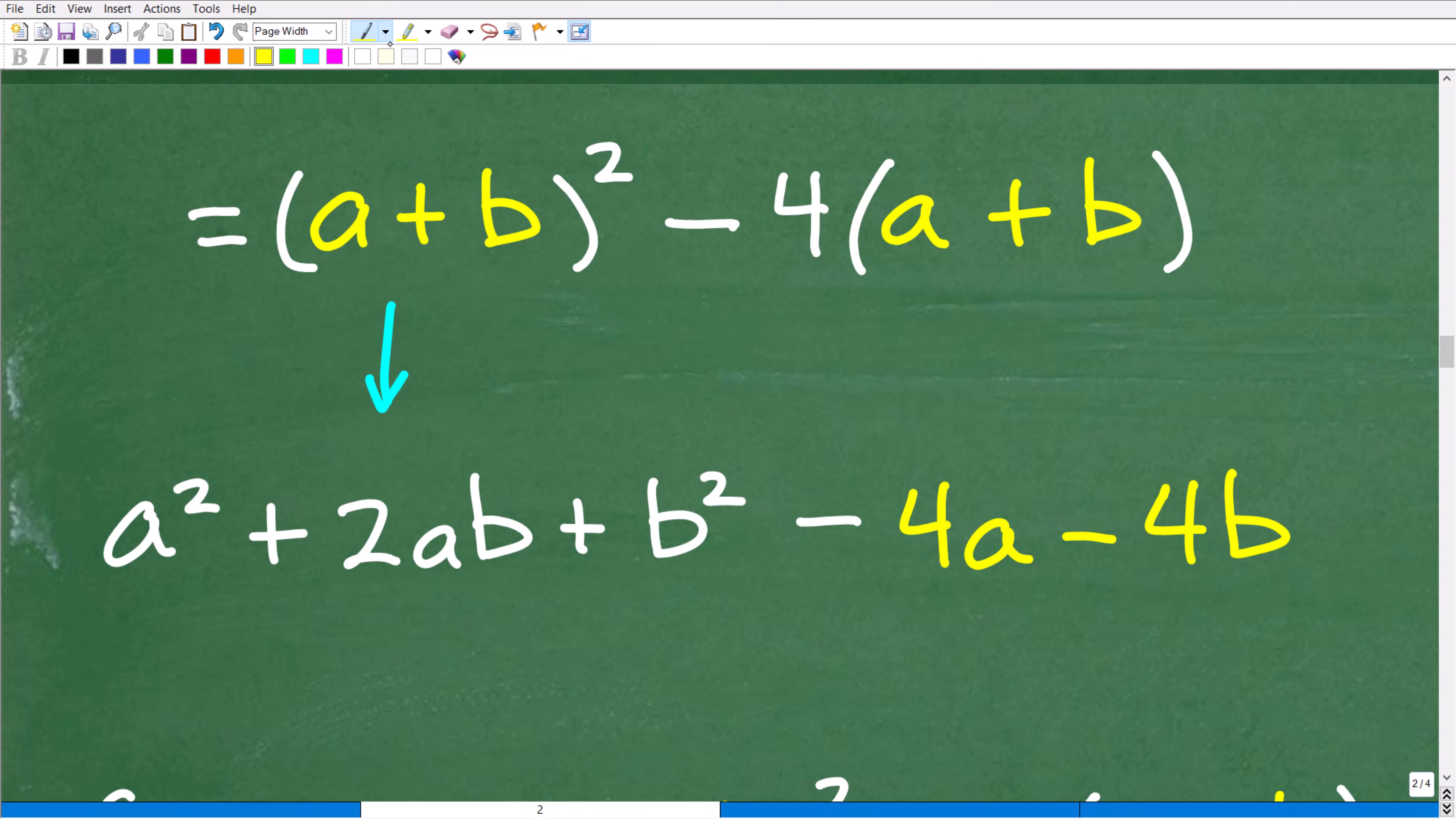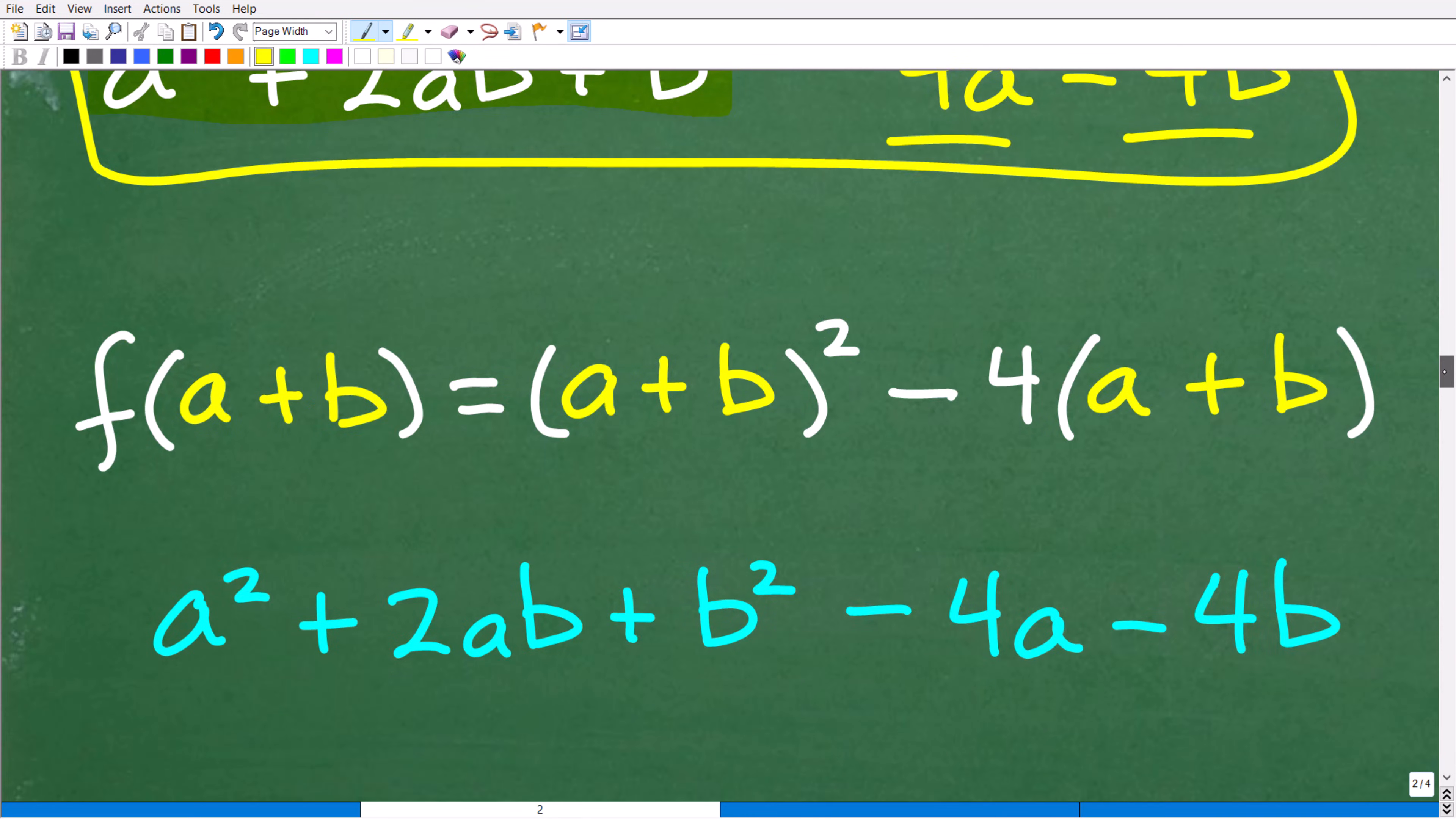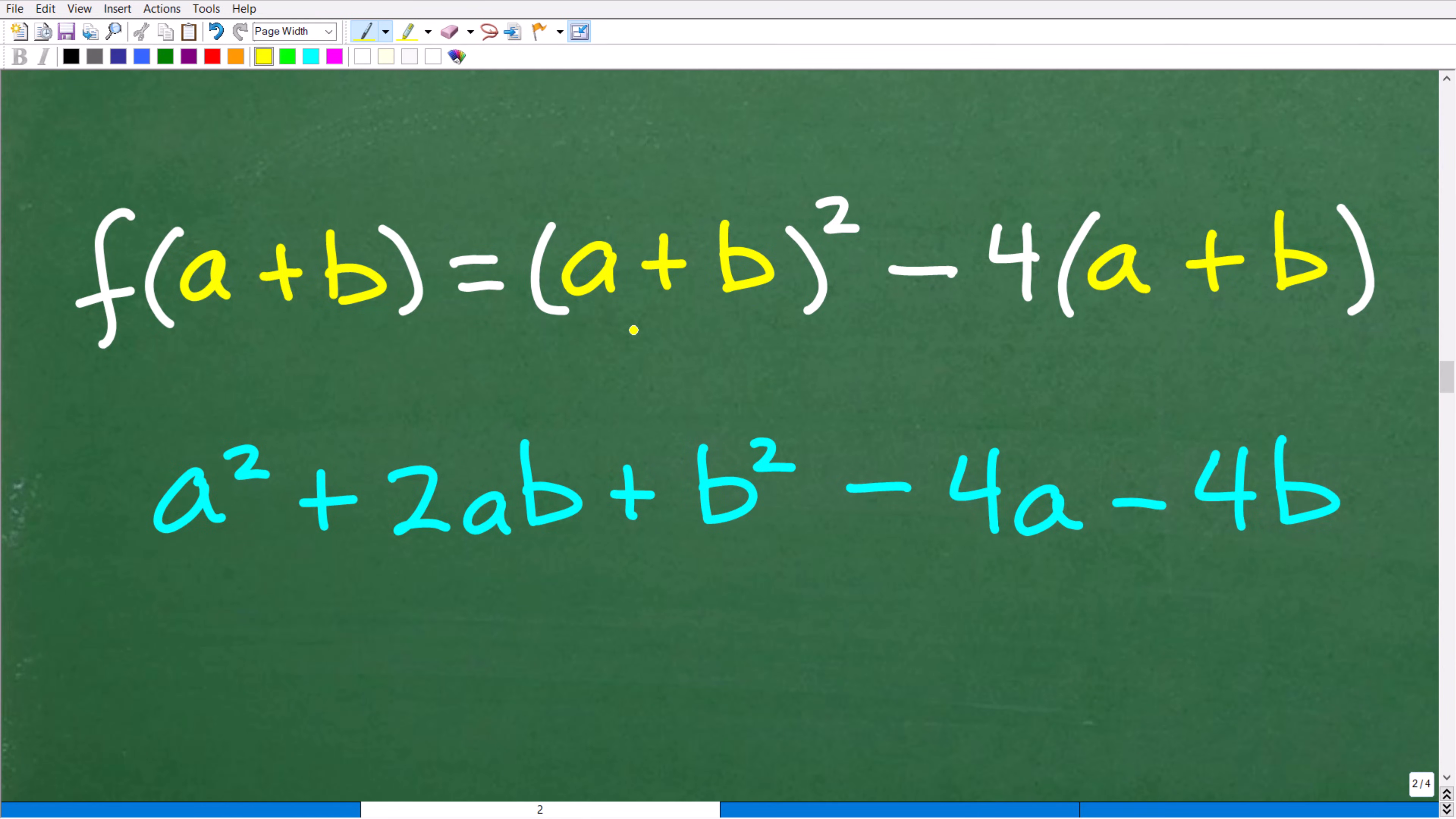So we have (a+b)², we got this trinomial right there. Now I have -4(a+b), or I can think of this as plus negative 4. Use the distributive property. So -4 times a is -4a, -4 times b is -4b. And this would be my final expression: a² + 2ab + b² - 4a - 4b. So f(a+b) for this particular function, this was the setup and this was the answer.